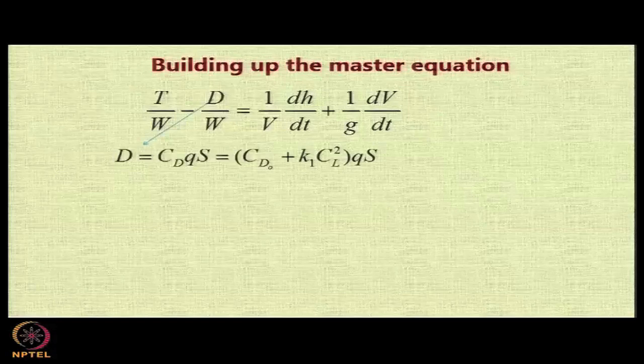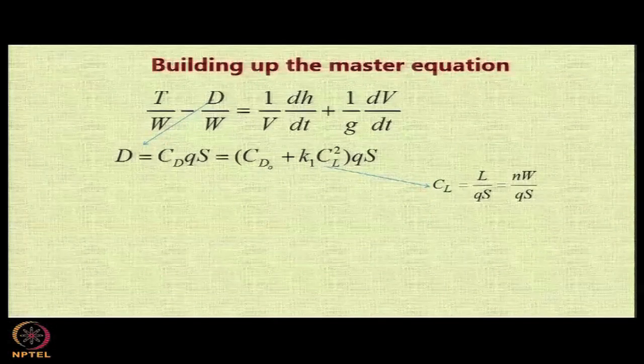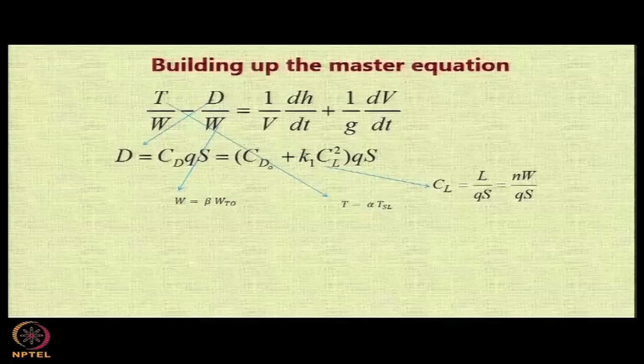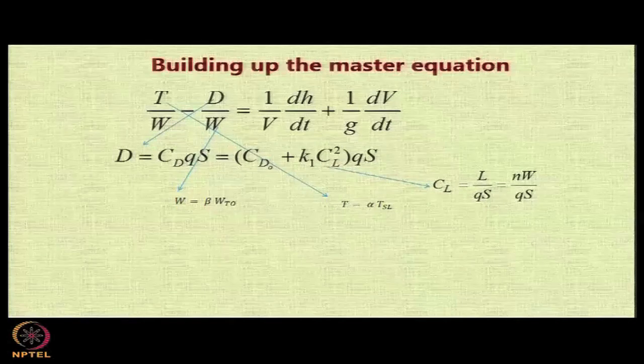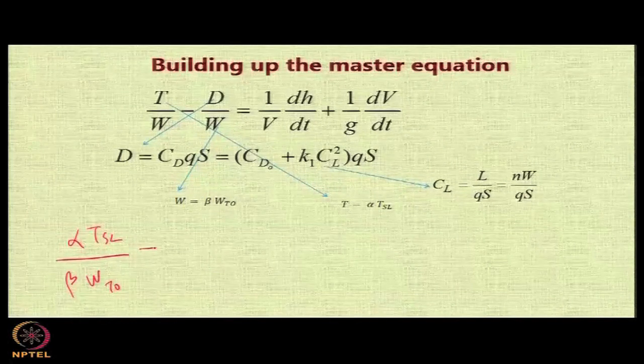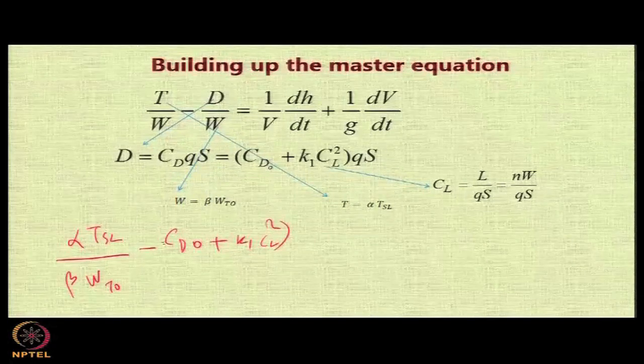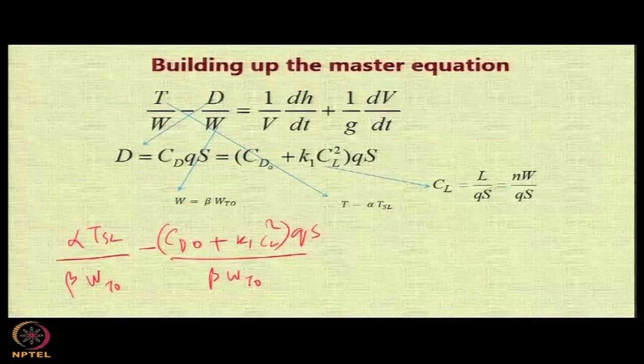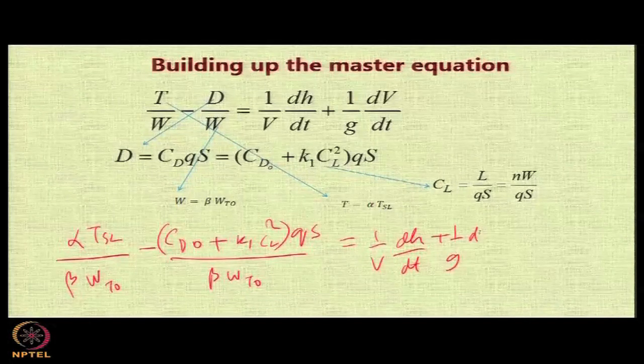This is the basic master equation that we have derived. Now what we can do is we can replace D with CD0 plus K CL squared into QS. We can replace CL by NW by QS. We can replace W by β times WTO, and we can replace T by α times TSL. If we do that, then what you get will be as follows: T will become α times TSL upon W will become β times WTO minus D will become CD0 plus K1 CL squared into Q into S upon W will become β times WTO, and that will be equal to 1 by V dH by dt plus 1 by G dV by dt.